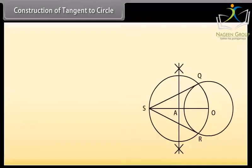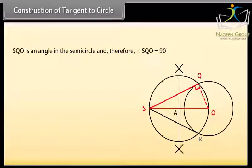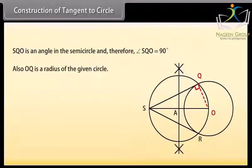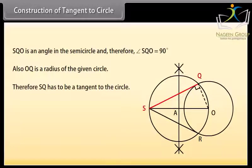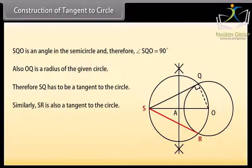Let us now check how this construction provides us the required tangents. Join OQ. We can now see that angle SQO is an angle in the semicircle, and therefore angle SQO is equal to 90 degrees. Also, OQ is a radius of the given circle. Therefore, SQ has to be a tangent to the circle. Similarly, we can say that SR is also a tangent to the circle.